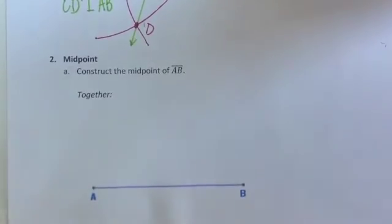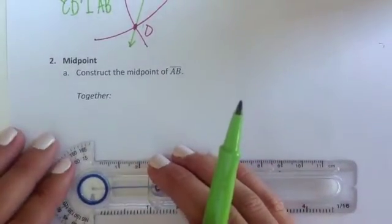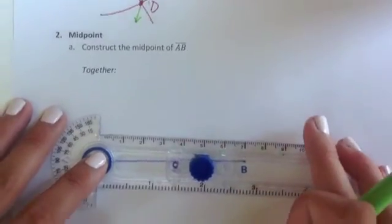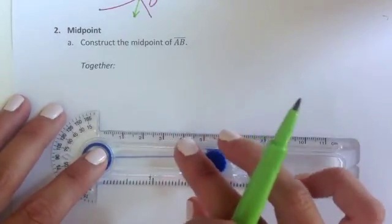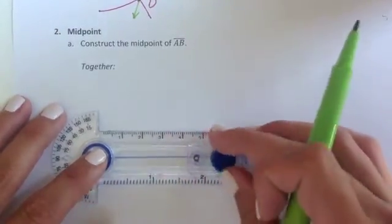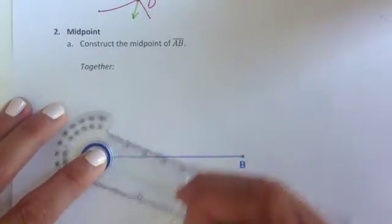We started by putting our center on A. We swung our radius so that it's open to greater than half of the given segment. Again I shoot for three quarters. Swing those arcs above and below.